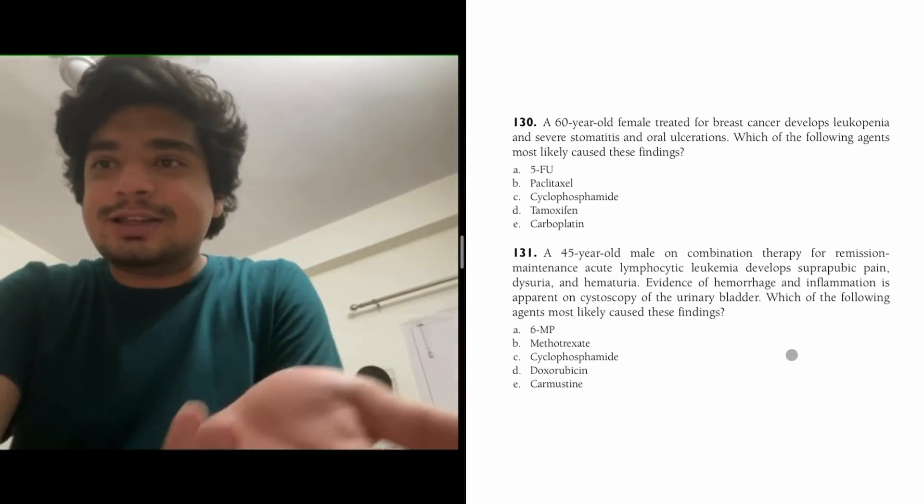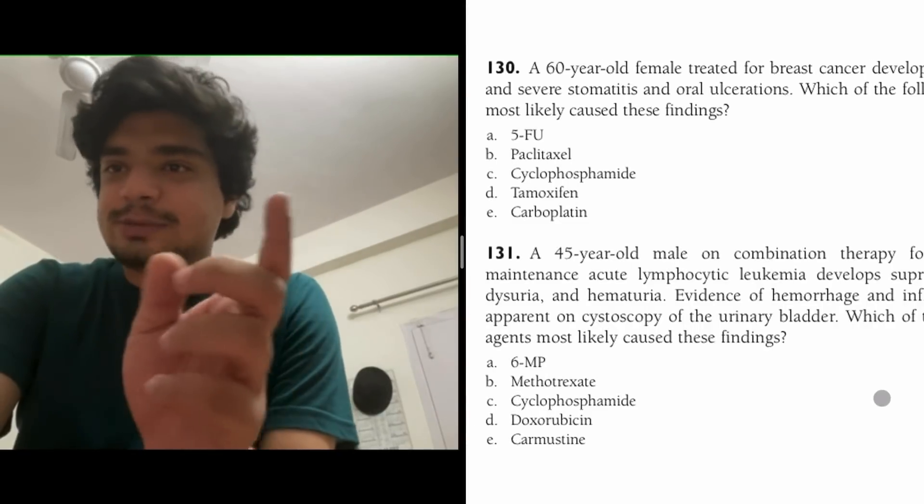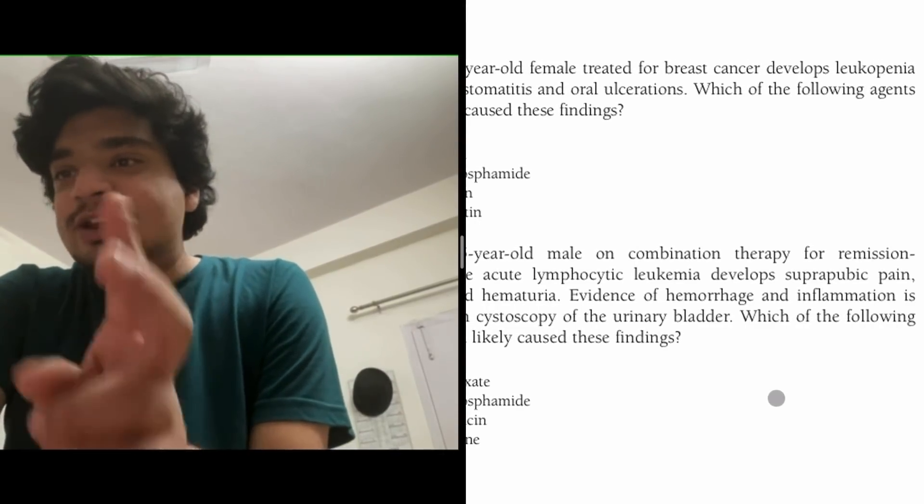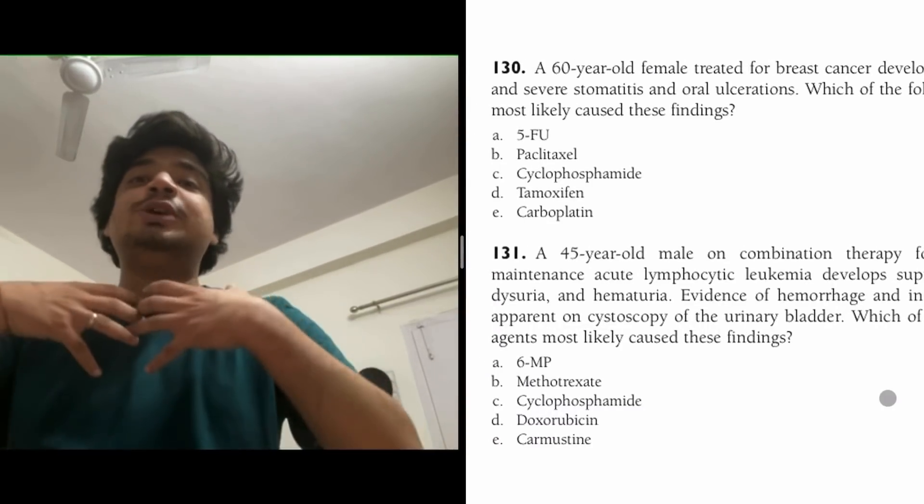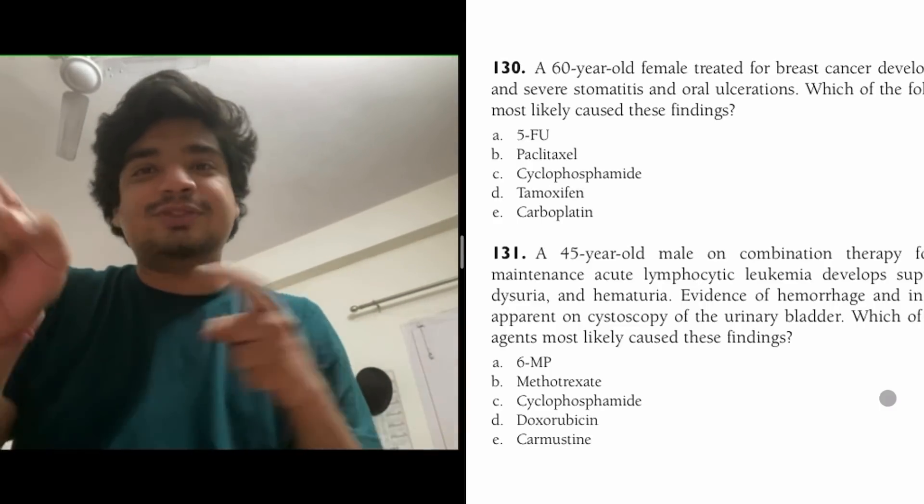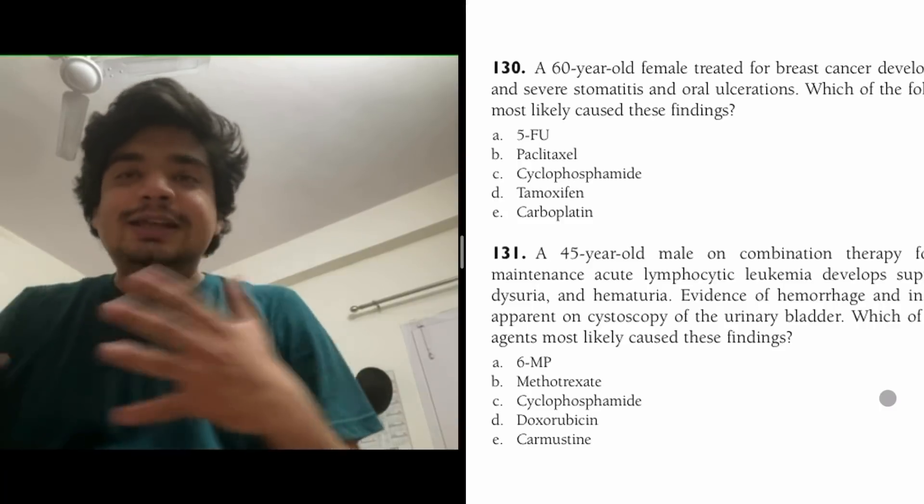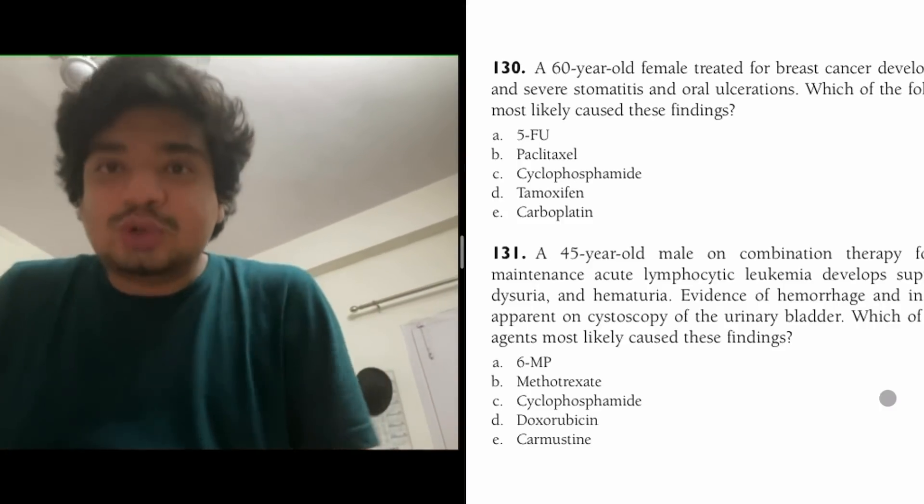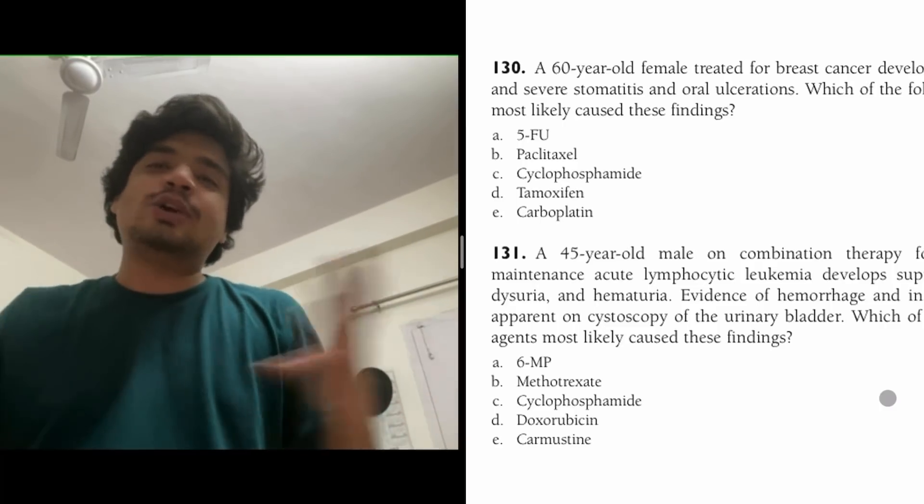Some questions I found: A 45-year-old male is on combination therapy for remission of acute lymphoblastic leukemia. He develops suprapubic pain and hematuria. There's evidence of hemorrhage and inflammation. Which drug is most likely to cause this? They're explaining in a clinical scenario that cyclophosphamide causes hemorrhagic cystitis. Hence the answer is cyclophosphamide. That's how you integrate clinicals.